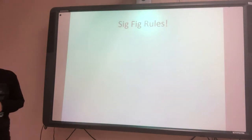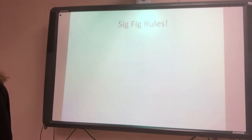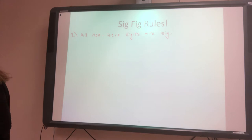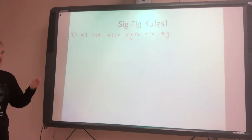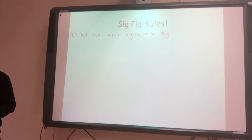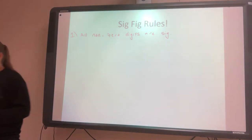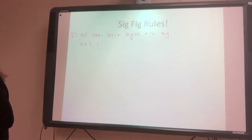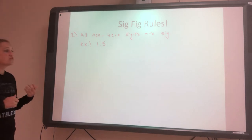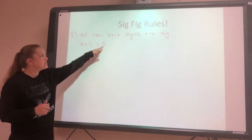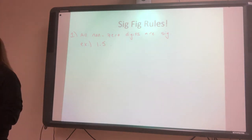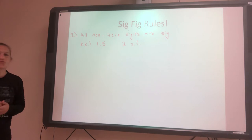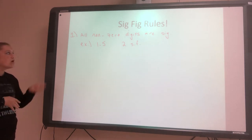Here are the rules. Rule number one is that all non-zero digits are significant. Sig figs is short for significant figures. So if it's not a zero, it counts. For example, 1.5 — how many significant figures would that have? The 1 and the 5 are non-zero, so they both count. So you would write two significant figures, or two sig figs, or just two — if I'm asking this on an exam.